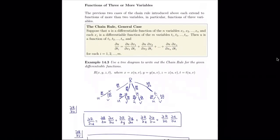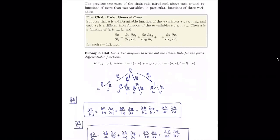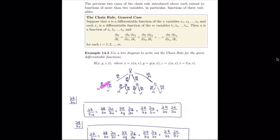So we have a tree diagram, and the next problem asks us to use it to write the chain rule for the given differentiable functions. We're told r is a function of x, y, z, and t, and each of those — x, y, z, t — is a function of u and v. To keep track, we start with our topmost function r at the apex, branching to x, y, z, and t. Then each of those forks further to u and v.